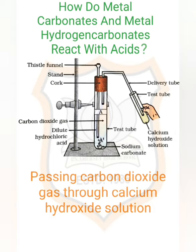Next, how do metal carbonates and metal hydrogen carbonates react with acids? Let us have an activity. Take two test tubes, label them A and B. Take about 0.5 grams of sodium carbonate (Na₂CO₃) in test tube A, and about 0.5 grams of sodium hydrogen carbonate (NaHCO₃) in test tube B. Add about 2 ml of dilute hydrochloric acid (HCl) to both test tubes. Pass the gas produced in each case through lime water — that is calcium hydroxide solution — and record your observations.